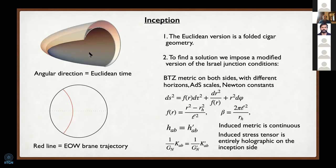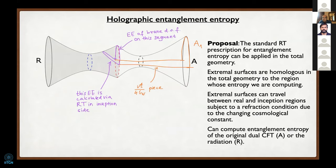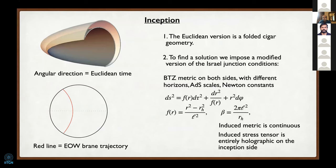Now the entanglement wedge of the radiation contains all of the inception geometry plus the interior of the black hole. The island is then the interior of the black hole, and its boundary is the original black hole horizon—just like in the original island formula. If you erase the inception picture and draw the radiation as being stuck over at the boundary, this island in the gravitating region is disconnected from the asymptotic part of the real space where the radiation was originally collected. That's basically what the island formula says.